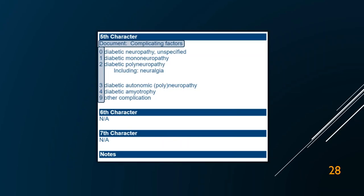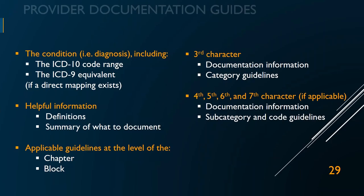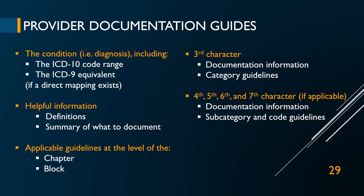So what we've created is a tool that can be used by a coder and a provider together to make sure they're on the same page and to help train them. The PDG summarizes the condition, includes helpful terminology definitions, reviews guidelines at the chapter and block level as well as at each character level, and specifies what must be documented for each character. I suggest you pick the top 10 conditions you code for most often and get really good at documenting for those 10 conditions. That will greatly decrease the chances of an audit going awry.